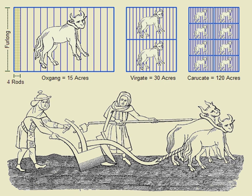Based upon the International Yard and Pound Agreement of 1959, an acre may be declared as exactly 4,046.8564224 square metres. The acre is a statute measure in the United States and was formerly used in the United Kingdom and almost all countries of the former British Empire, although informal use continues.